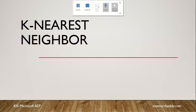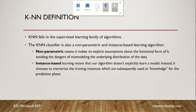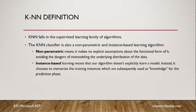The KNN algorithm is a classification algorithm which we use for nonlinear classification. It has a certain definition: it is a nonparametric and instance-based algorithm.